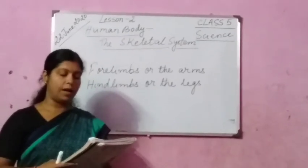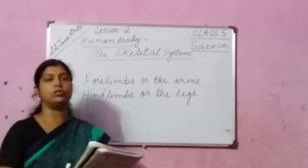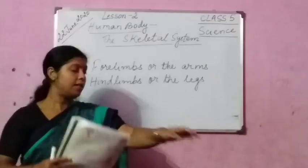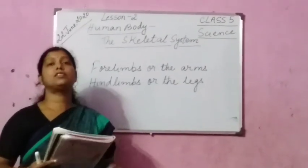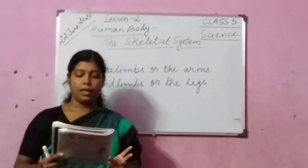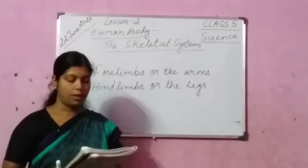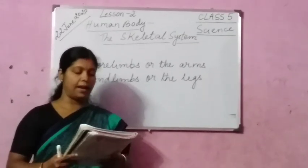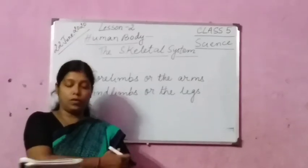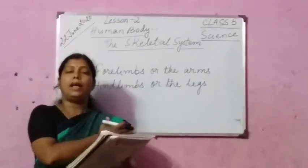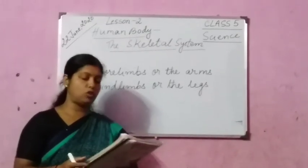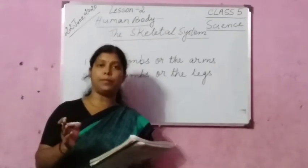The lower arm has two long parallel bones called ulna and radius. Humerus is joined to ulna and radius at the elbow. Your upper arm and the lower arm are joined here at the elbow.